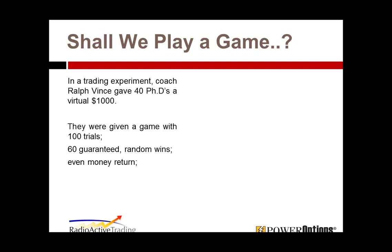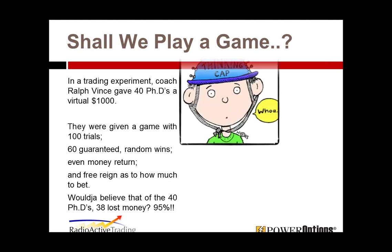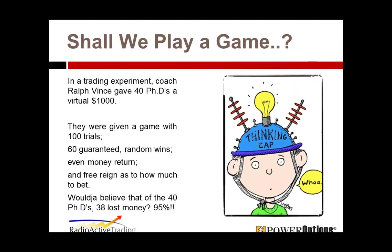They were guaranteed 60 wins, but it would happen randomly — basically a 6-in-10 chance of winning each time. It was an even money return: you bet a dollar, you lose a dollar, or you bet a dollar and you win a dollar. They were given free reign as to how much to bet, and that was the killer. Would you believe that 38 out of 40 of these very bright individuals lost money? That's 95%.